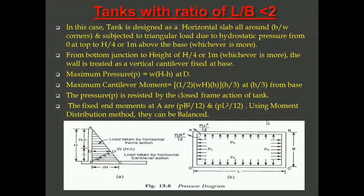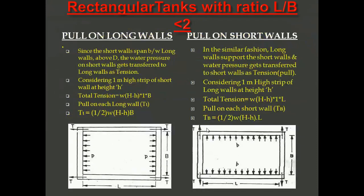The pressure distribution diagram shows load distribution and fixed end moments. In the A-B direction, the moment is p × L² / 12, and in the A-D direction it is p × B² / 12. The triangular pressure distribution diagram clearly shows the load taken by cantilever action from the bottom junction to height H/4 or one meter whichever is more. The wall is treated as a fixed cantilever at the base, and it is a closed frame action. In Case 2, when L/B is greater than two, the analysis changes.